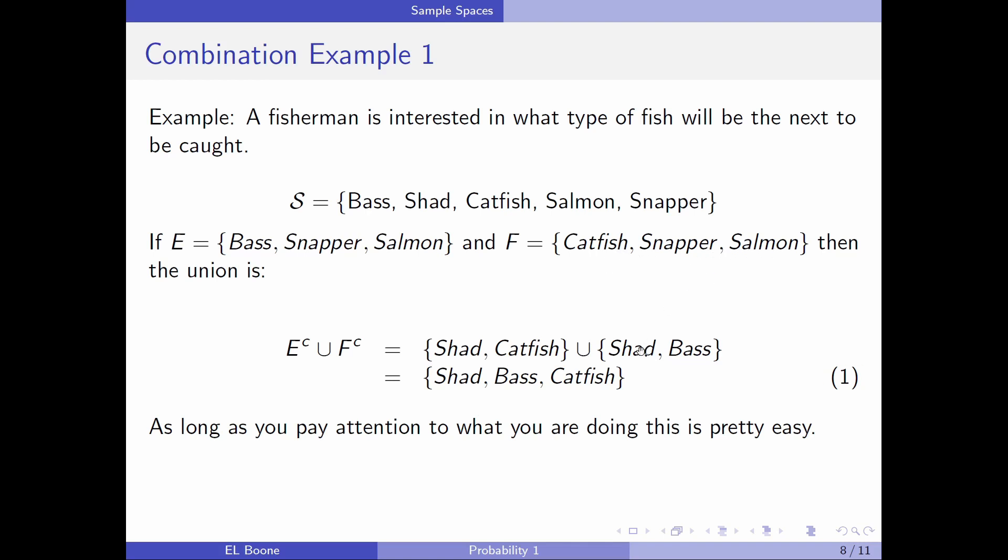And then let's see what's not in F. So shad and bass are not in there. So if I were to union these two together, I would get shad, bass, and catfish. As long as you pay attention to what you're doing, it's pretty easy. They sort of follow up order operations. Think of this as E complement is like doing that operation before you would do the union.